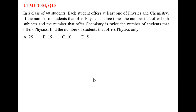In this question, we have that in a class of 40 students, each student offers at least one of physics and chemistry. If the number of students that offer physics is three times the number that offers both subjects, and the number that offers chemistry is twice the number of students that offer physics, find the number of students that offer physics only.